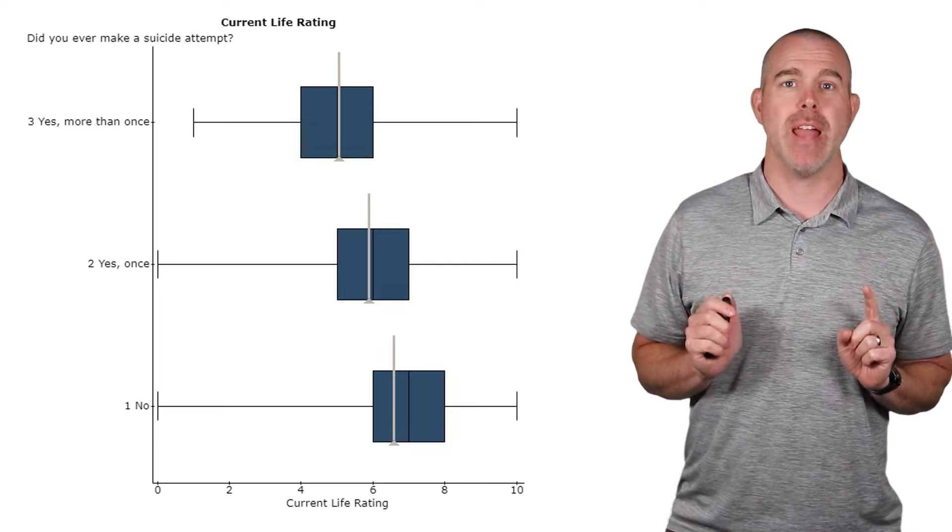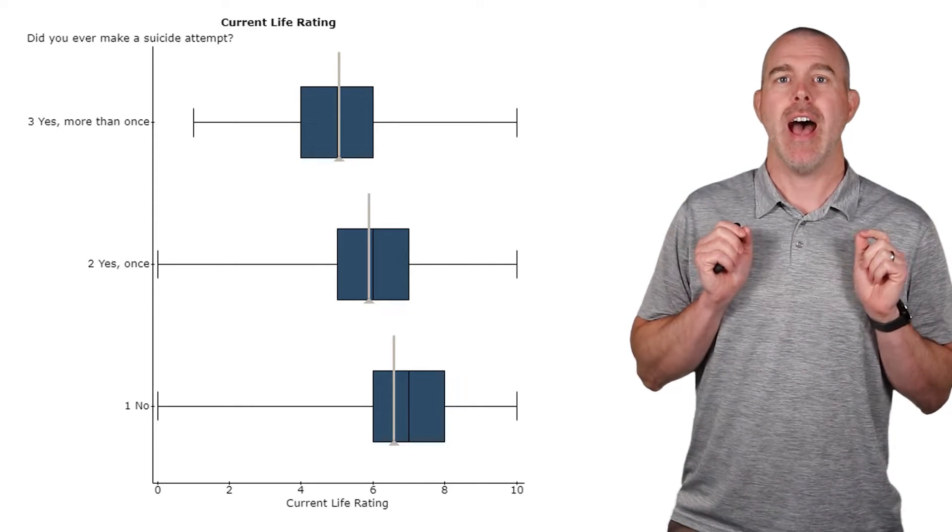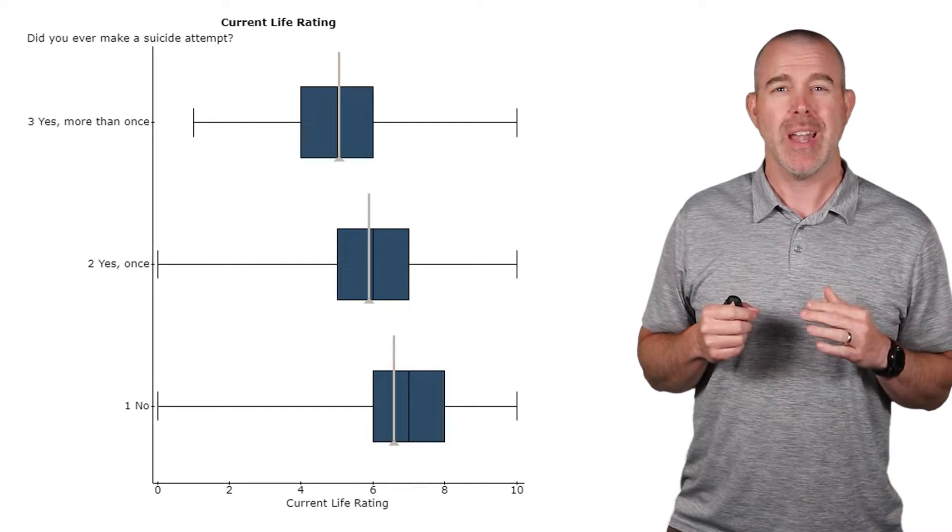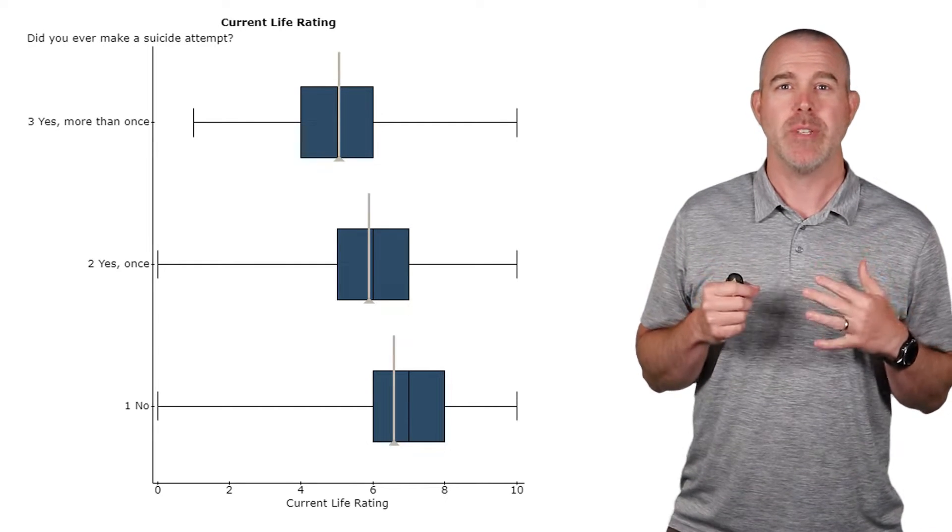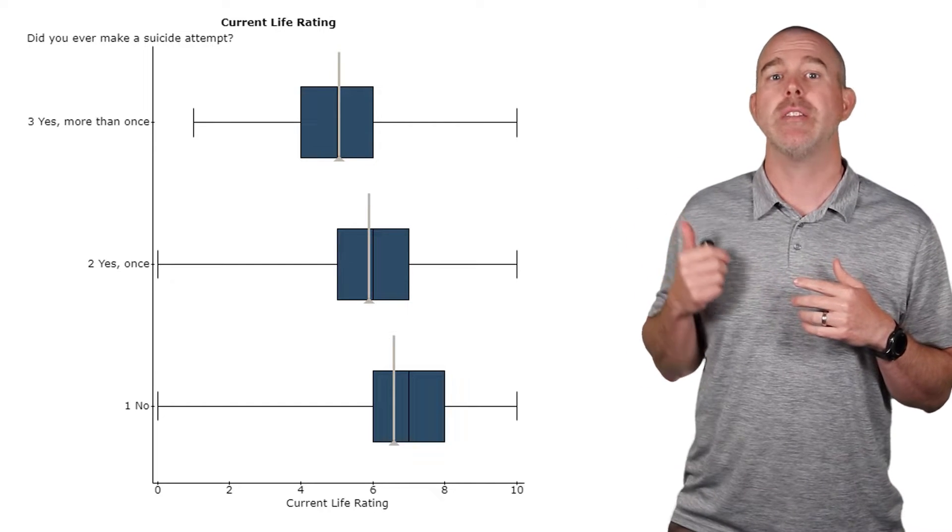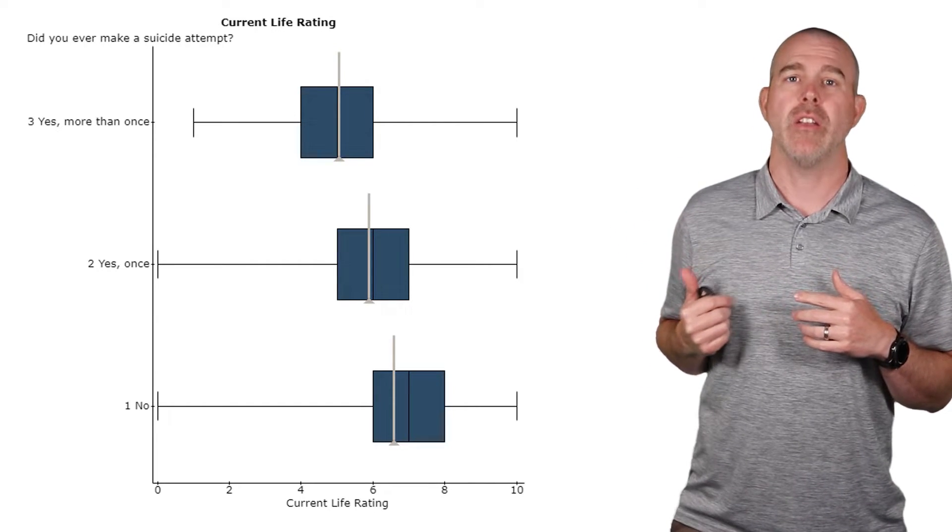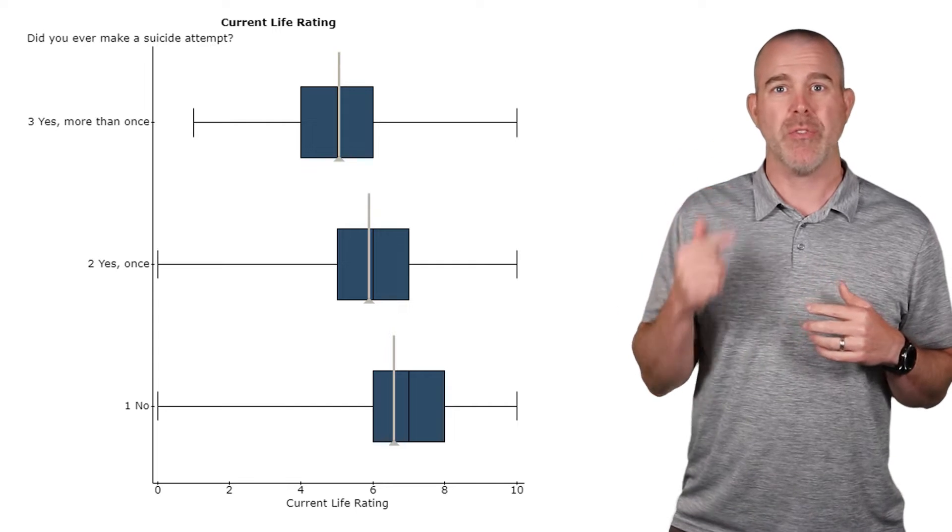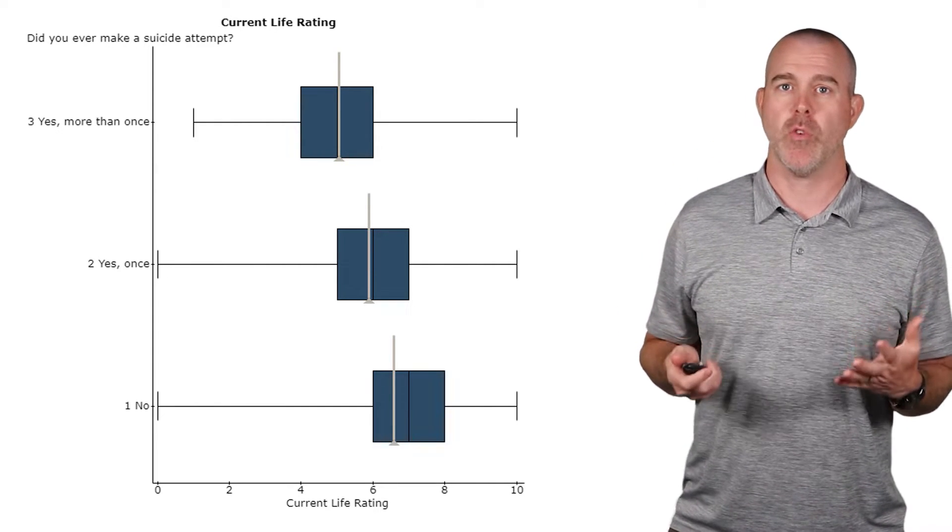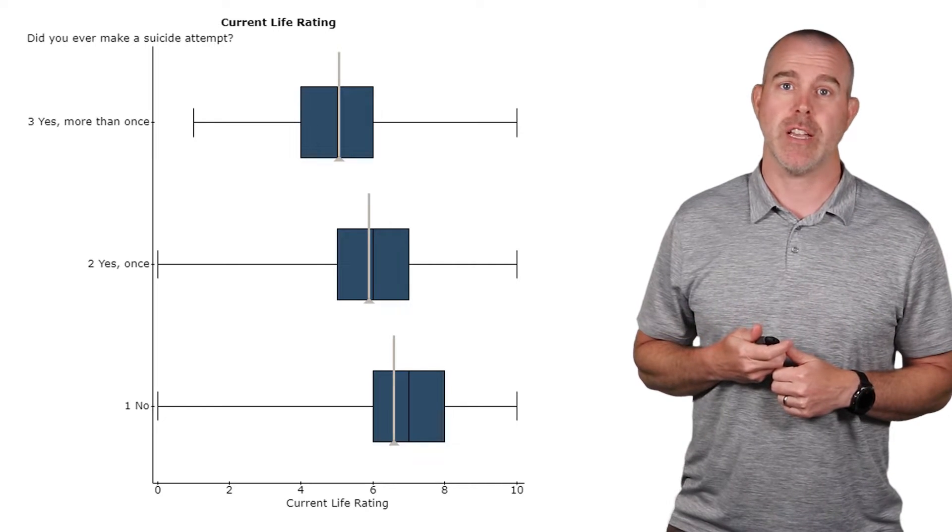I have up here a box plot comparing the current life rating, that's a zero through 10 rating, by whether or not the individual has ever attempted suicide. So we have those who have yes more than once, yes just once, and no. So there are three different groups, and we haven't learned about how to compare three different groups before, and that's what this section is about.